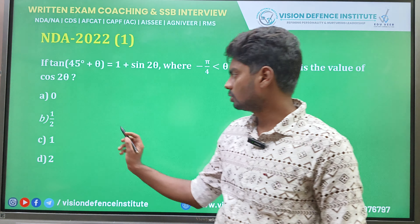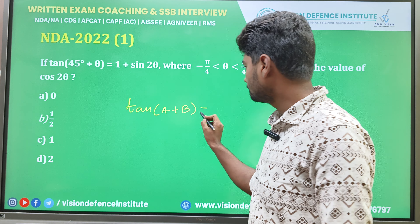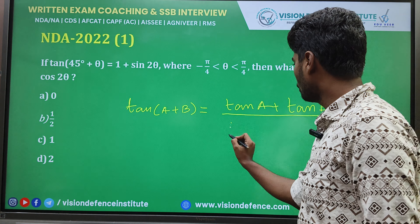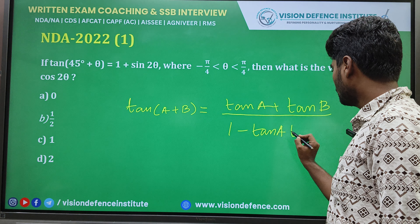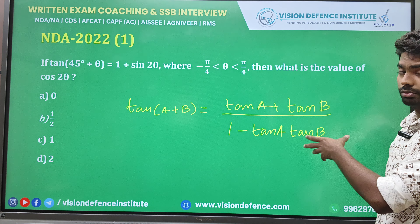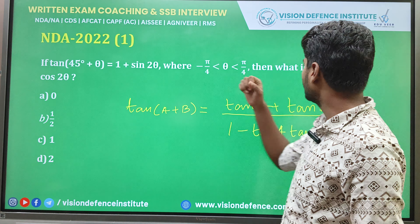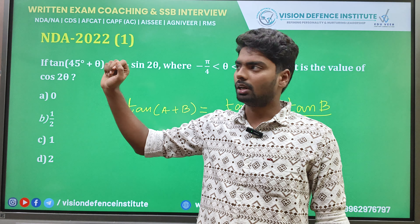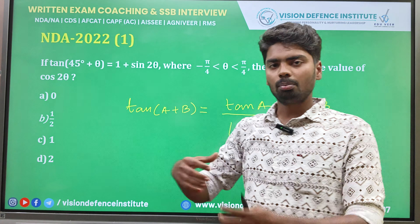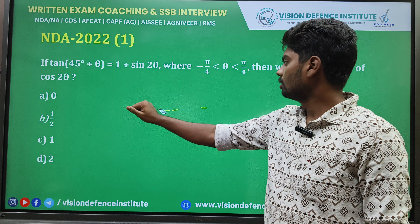If we solve this normally, we would write the tan(a+b) formula: tan(a+b) = (tan a + tan b) / (1 - tan a·tan b). Here a = 45 and b = θ. We expand it, then try to transform the LHS to RHS, working through cos2θ and sin2θ — but that involves many steps.